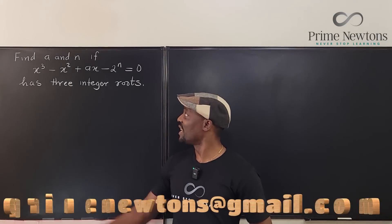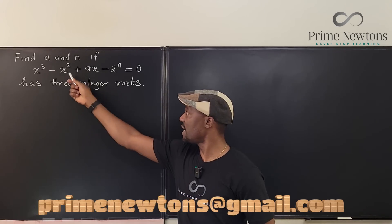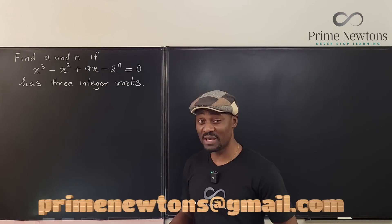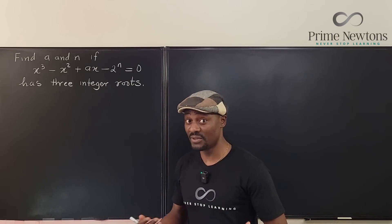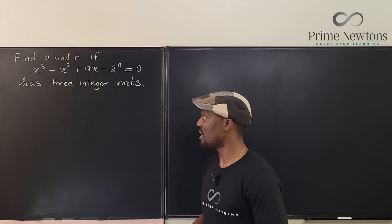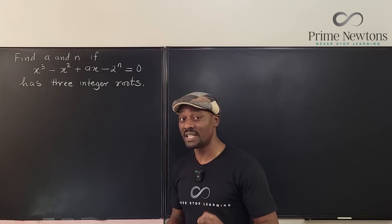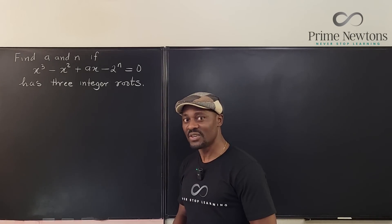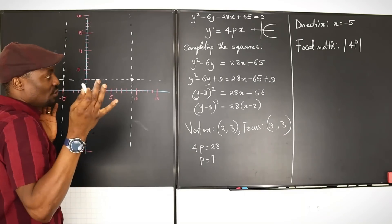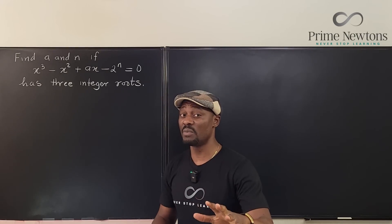Welcome to another video. Let's find a and n if this cubic equation has three integer roots. We don't know what a is and we don't know what n is. The best thing to do is look at it — it's a cubic equation. Vieta's formula is the first thing that comes to mind, because I really don't know what these two are. It doesn't look impossible, so let's get into the video.